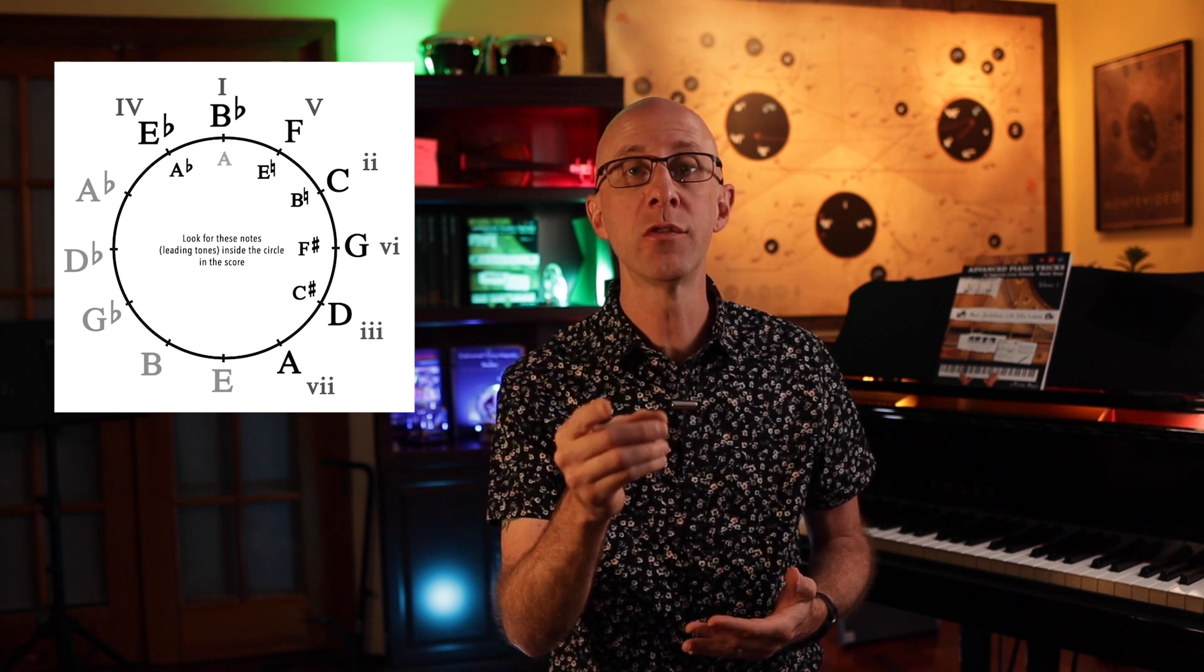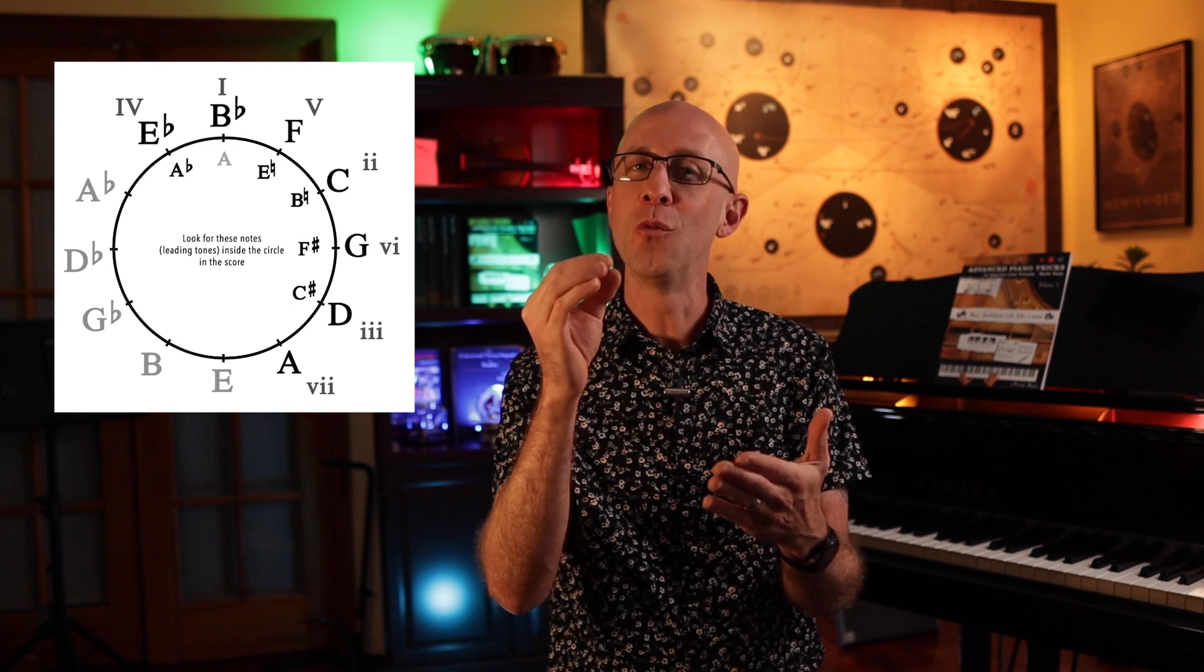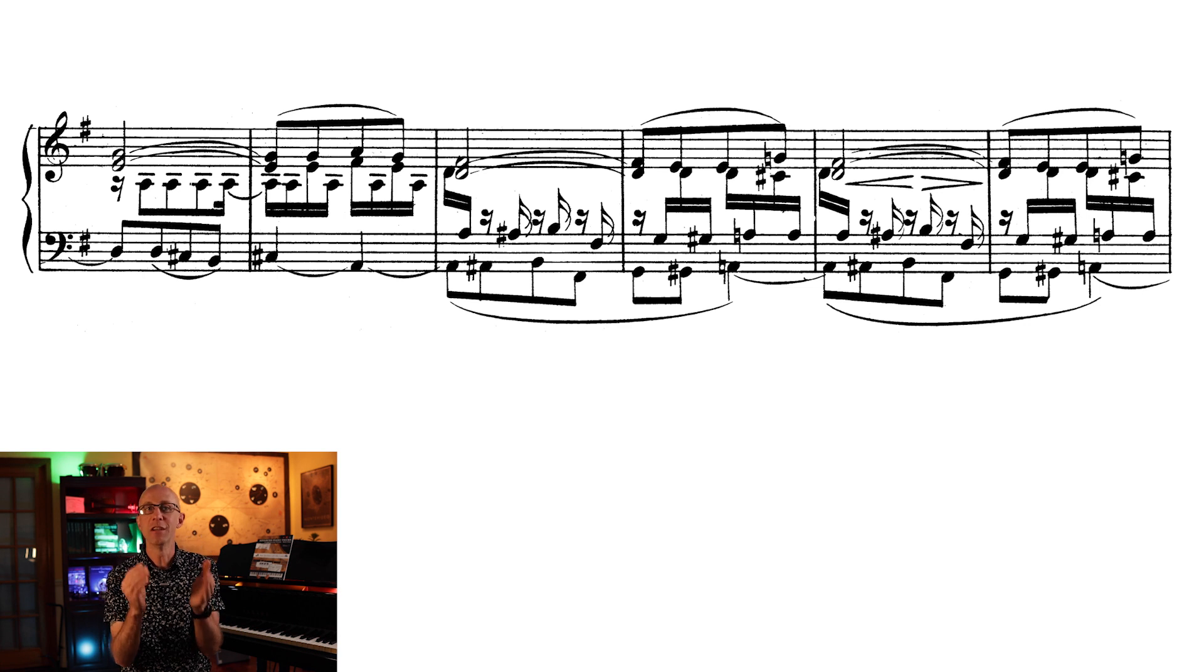With this information, you are ready to spot and label any secondary dominant in a piece of music. If you come across an accidental that isn't paired with one of your diatonic notes, you're probably dealing with a more advanced secondary function, which we will talk about in a later video. So let me show you how easy it is to use this new enhanced circle of fifths.